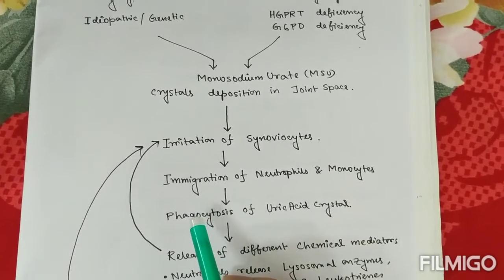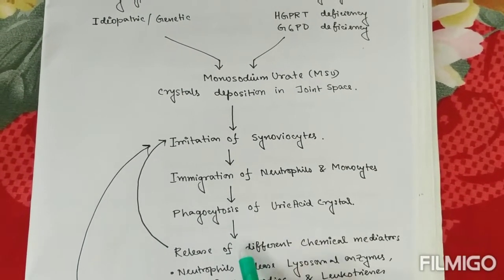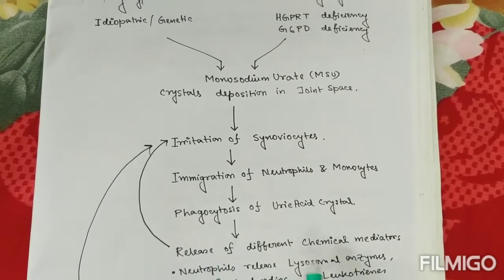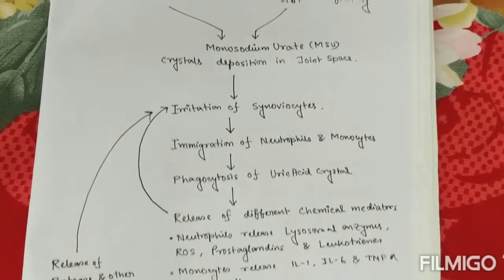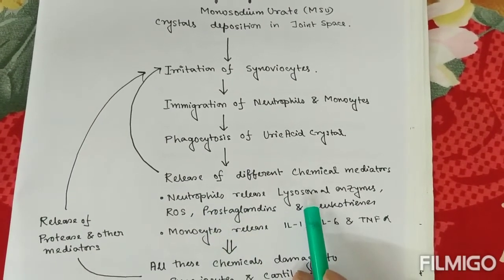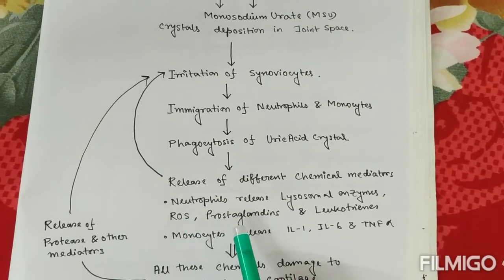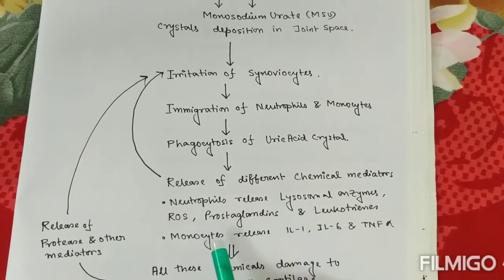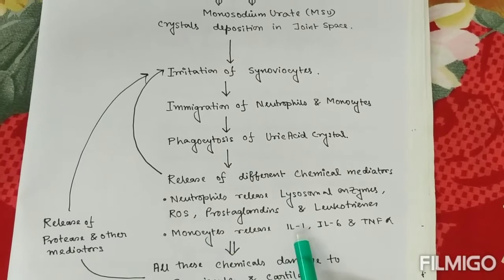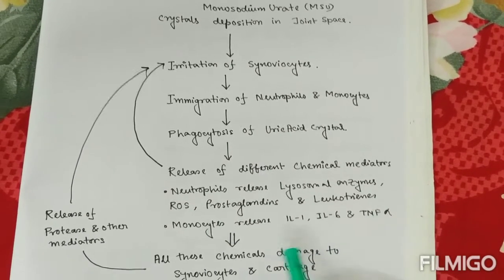They will try to phagocytose the uric acid crystals and ultimately release different chemical mediators. Neutrophils release lysosomal enzymes, reactive oxygen species, prostaglandins, and leukotrienes, while monocytes will release interleukin-1, TNF, and other pro-inflammatory cytokines.